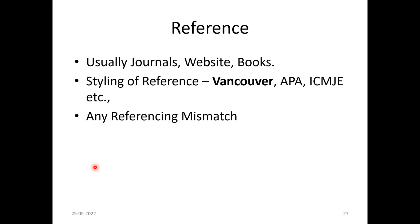When looking at references, learn about the different referencing styles. The most commonly used is the Vancouver style, which is numerical referencing. Other styles include author-date formatting — for example, the APA style and the Harvard style. All these different types of references can be explored during a journal club presentation, and you can also look for any reference mismatches.